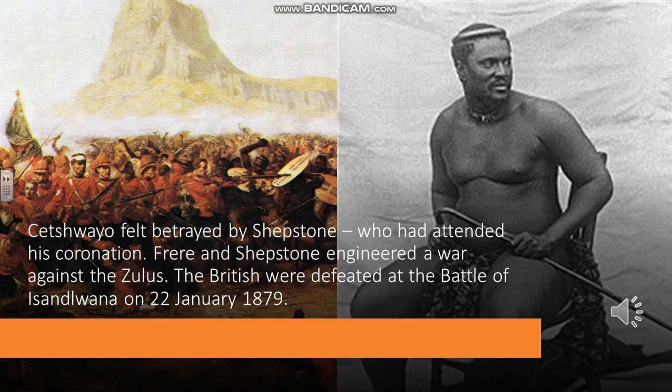The Battle of Isandlwana, which you're probably familiar with, saw the British defeated by a well-organised Zulu army. But ultimately, of course, the Zulus were beaten, although the campaign to defeat them cost £4.9 million. Having the Zulu threat removed, the Boers in the Transvaal saw no reason why they should continue in the situation where they had been annexed by the British Empire.